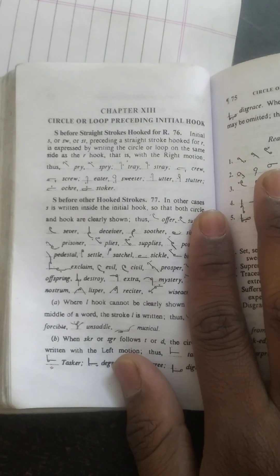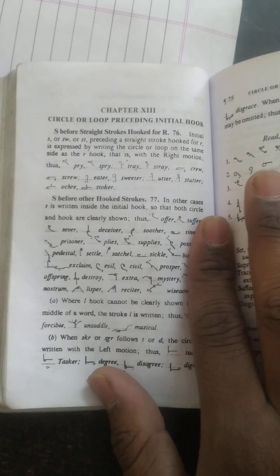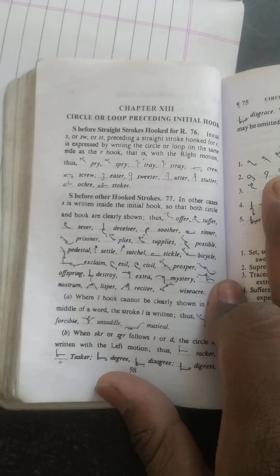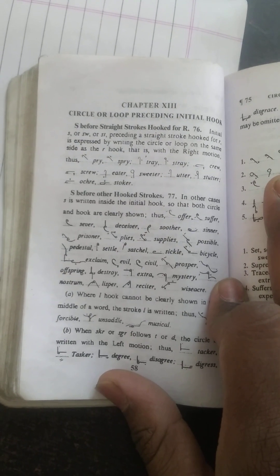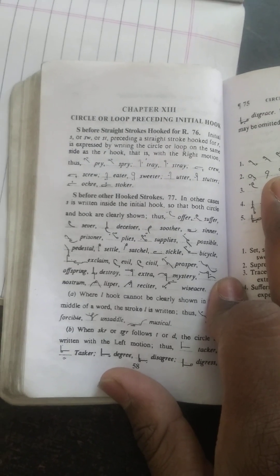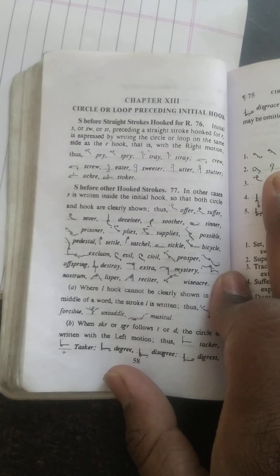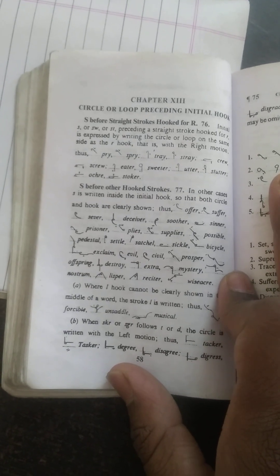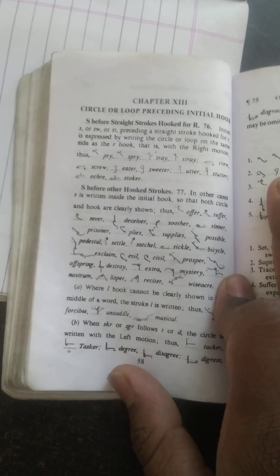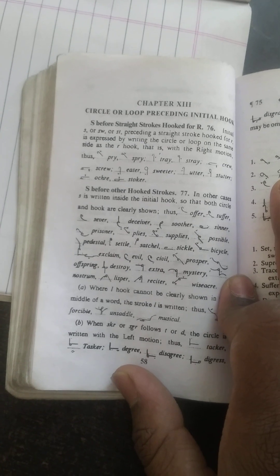Pride, strike, prey, stray, crow, screw, like eater, sweeter, utter, stutter, hawker, stoker. S before other hook would throw it. In other cases S is written inside the initial hook, so that both circle and hook are clearly shown. Offer, suffer, sever, deceiver.